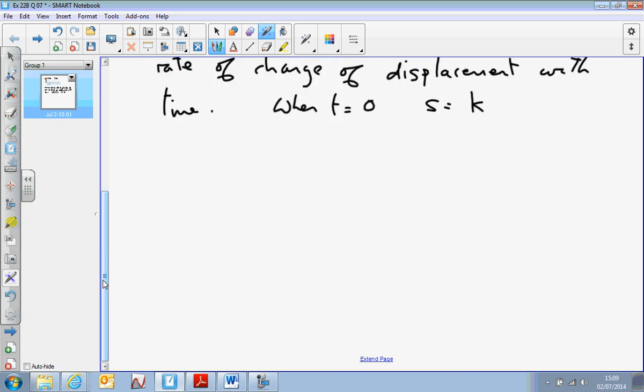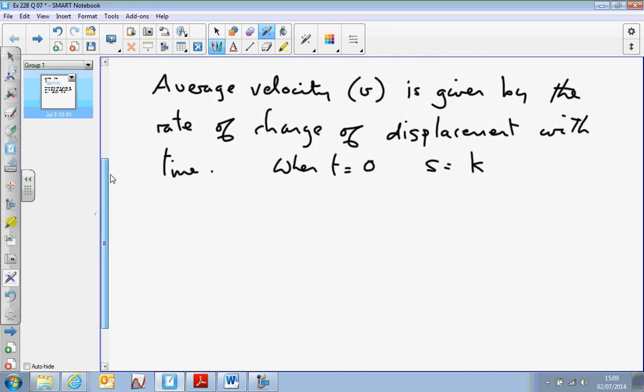In a similar way to the question in the book, we're defining what we mean by average velocity of something. The average velocity, v, let's call it, is given by the rate of change of displacement s at the time.